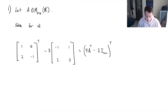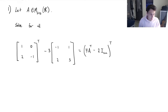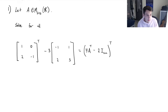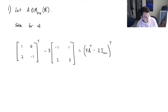Hey everyone. In this video I'd like to go over a couple examples of solving linear matrix equations. Basically, we're solving for an unknown, but instead of using just real numbers or complex numbers, in this case our unknown is actually a matrix. And this first question says that A is a 2 by 2 matrix that contains real numbers.